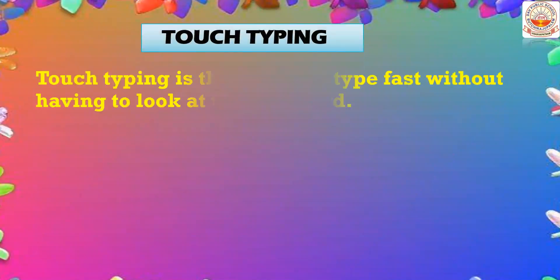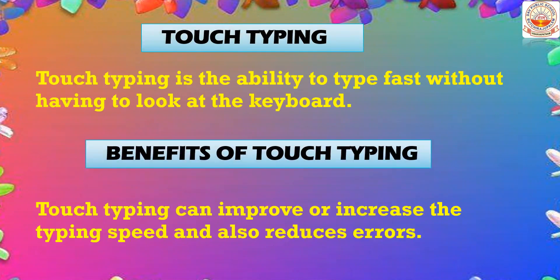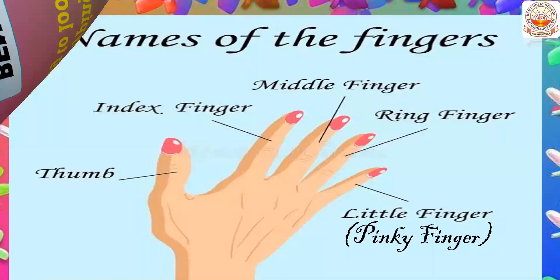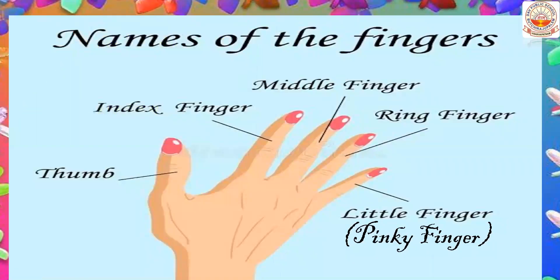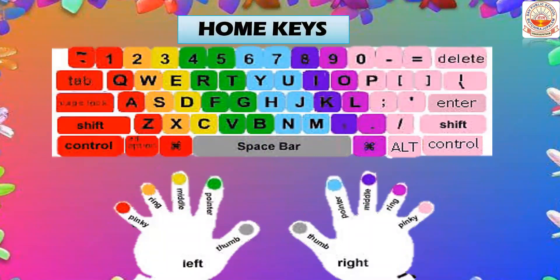In the previous video classes we learned about touch typing and its benefits. Touch typing is the ability to type fast without having to look at the keyboard. It increases typing speed and also reduces errors. You also learned the names of the fingers: thumb, index finger, middle finger, ring finger, and little finger — or pinky finger. You also learned the home keys.